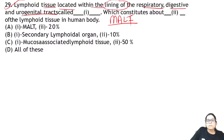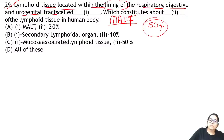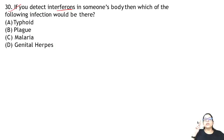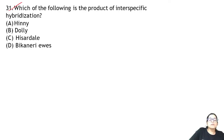MALT covers more than 50% of the body's lymphoid tissue. Answer for 29 is C. Question 30: if interferon is detected in someone's body, which disease is possible? It is genital herpes.